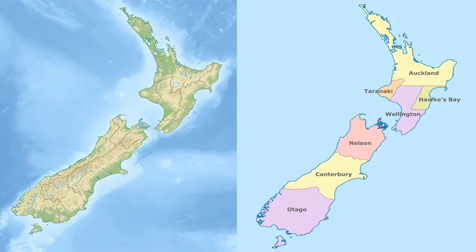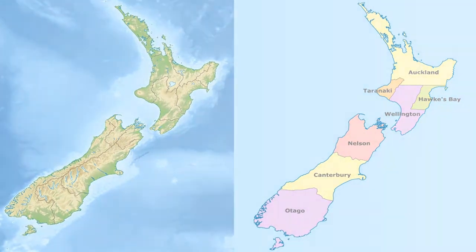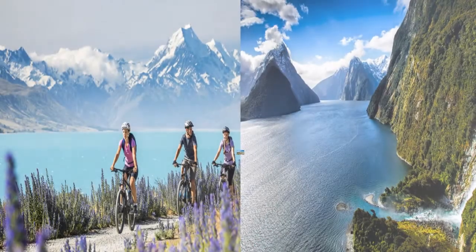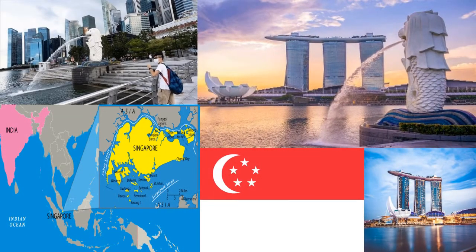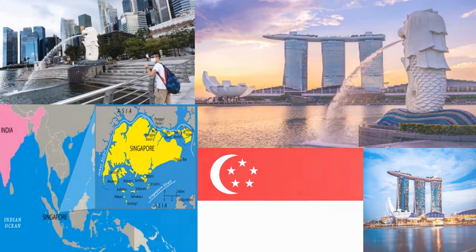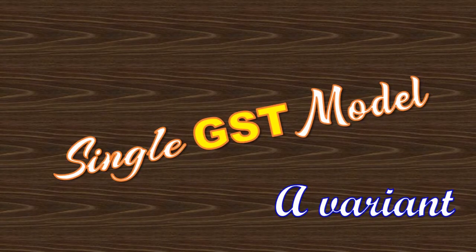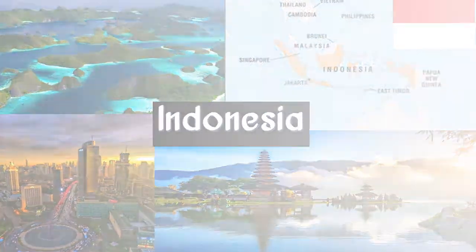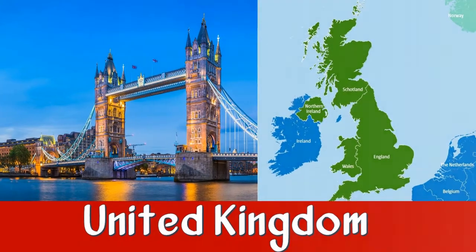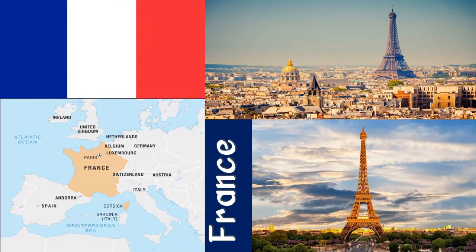Examples of countries that follow this system are New Zealand, which implemented GST in 1986 and until 2010 used to charge 10% GST. After 2010, the New Zealand government changed the rate to 15%, which is still applicable. Singapore follows a similar system where a GST of 7% is applicable on all products. There is another variant of the single GST model followed in countries like Indonesia, UK, France, etc., which use single GST with varying rates of tax depending on the nature of the product.